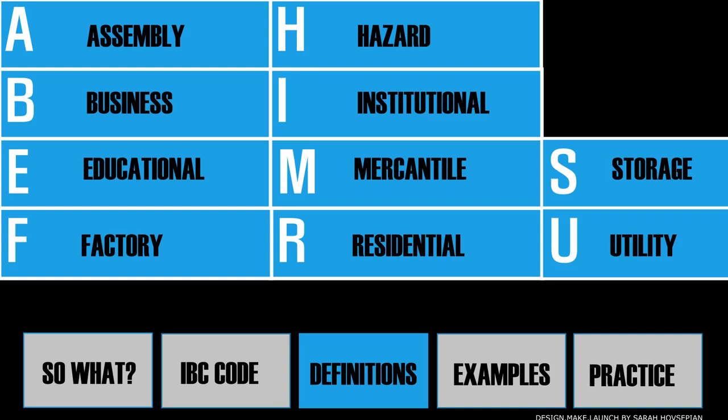Let's look at the big picture of the 10 occupancy groups most commonly used today — and don't forget to check your state's occupancy groups, as there may be additional ones. A is for Assembly, B is for Business, E is for Educational, F is for Factory and Industrial, H is for Hazard, I is for Institutional, M is for Mercantile, R is for Residential, S is for Storage, and U is for Utility and Miscellaneous.